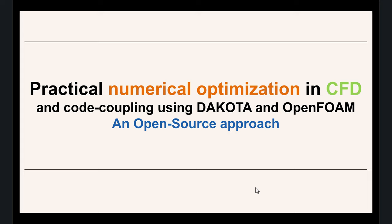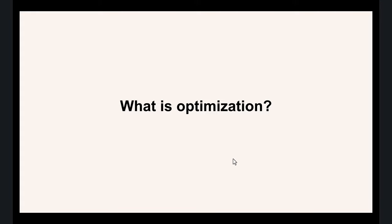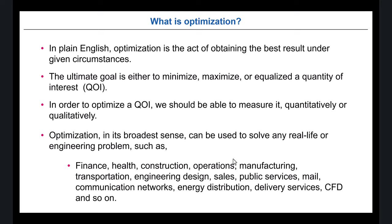We're going to talk about practical numerical optimization, CFD, and the Dakota-OpenFOAM coupling. Before going into that case, let me remind you what optimization is. Basically, this is the definition: it is the act of obtaining the best result under given circumstances. Our ultimate goal will be to optimize something, and that means we can minimize, maximize, or equalize a quantity of interest. I'm going to use this terminology — 'quantity of interest.' In literature it may be called the objective function, but we'll call it quantity of interest, and it can be anything.